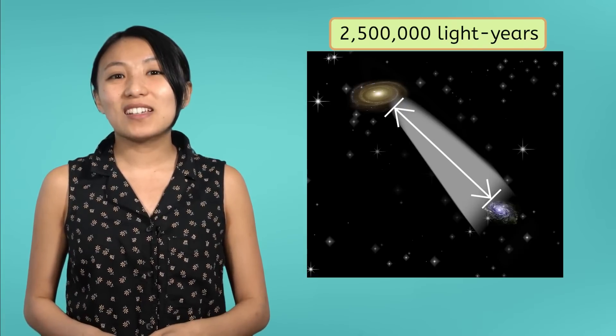So in a sense, astronomy is as close as we can get to time travel. And Andromeda might sound far away, but remember, it's the closest galaxy to ours. Astronomers have found galaxies over 10 billion light years away from ours.